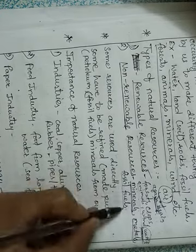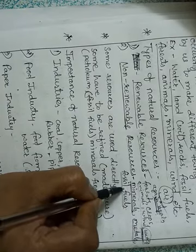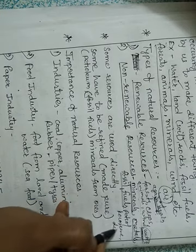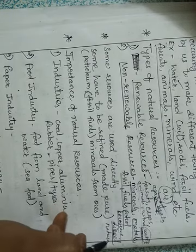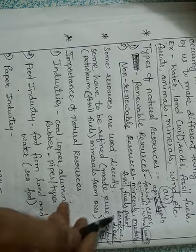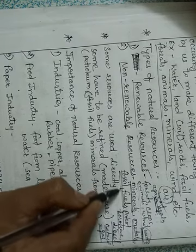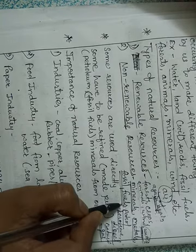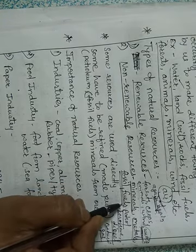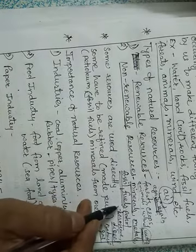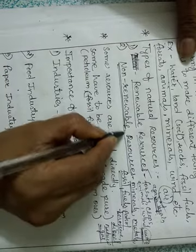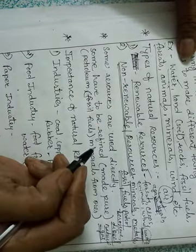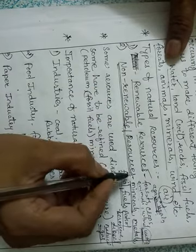Metals are also obtained from the earth. Fossil fuels — meaning the fuels we get from the earth such as petrol, kerosene, diesel, and natural gas — are also non-renewable. These fossil fuels took millions of years to form. If we keep using them continuously without thinking, these resources will get finished and we cannot get them back.